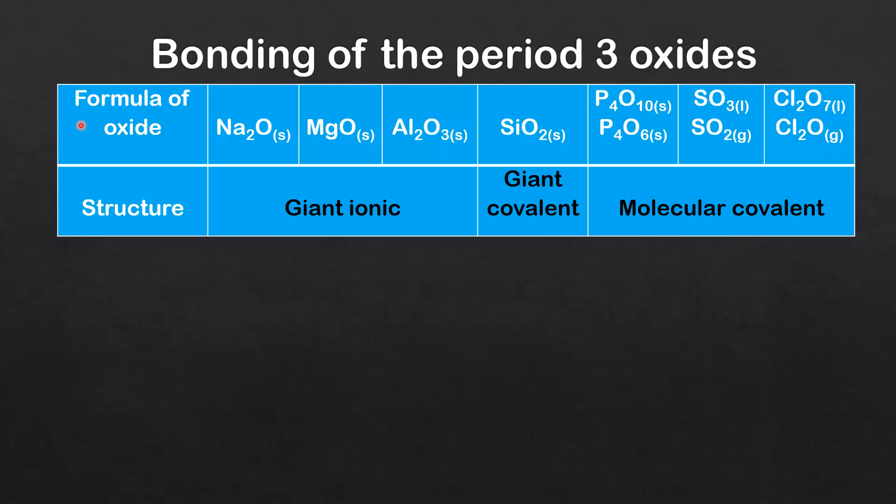Let's start with the bonding of the period 3 oxides. So we have the formula of the oxide. We have oxides of sodium, magnesium, aluminium, silicon, phosphorus, sulfur, and chlorine, and here we have the structure.